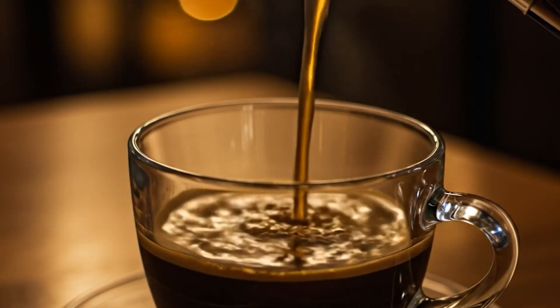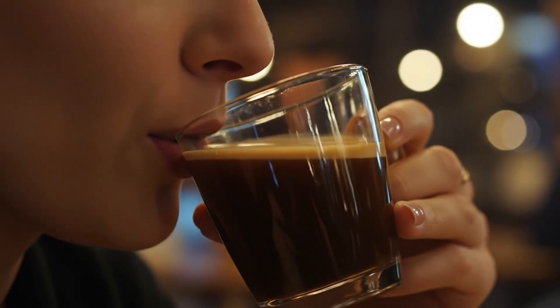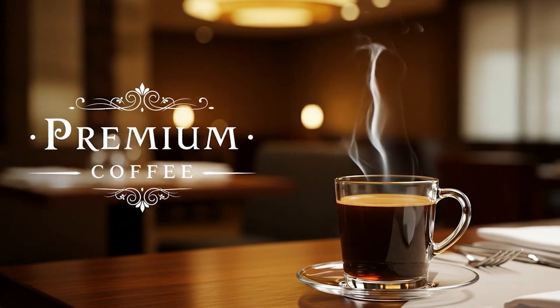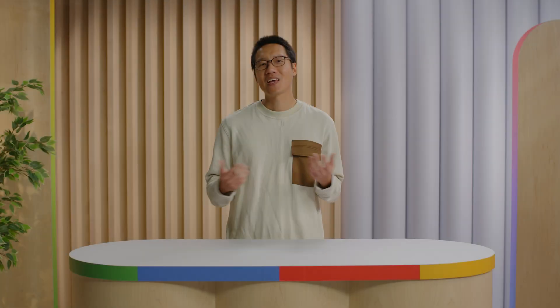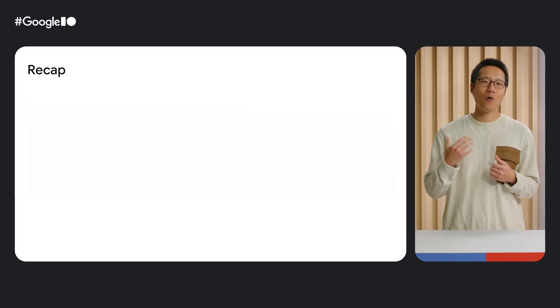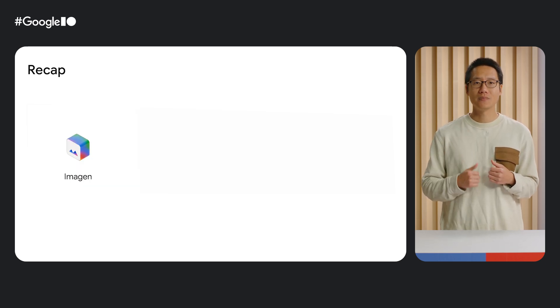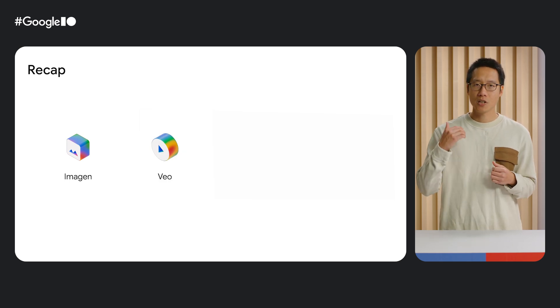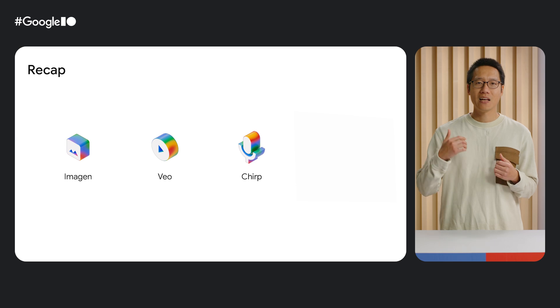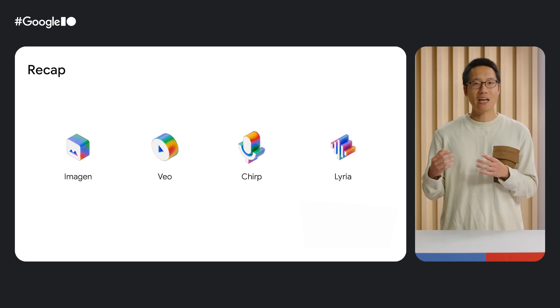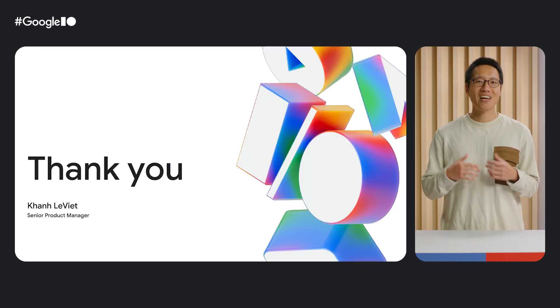Now let's take a look at the premium coffee video ad I created using this workflow. 'Premium coffee selects only the top 1% of fair trade Arabica beans. Slow roasted, perfectly brewed. Releasing notes of chocolate and spice. Premium coffee — the taste of true distinction.' I hope you liked the video. To recap, we talked about four generative media models today: Imagen for generating images, Veo for generating videos, Chirp for generating speech, and Lydia for generating music. You can find the Colab notebooks showing how to use the models in the video description. I'm looking forward to seeing what you'll create using these models. Thank you for watching.